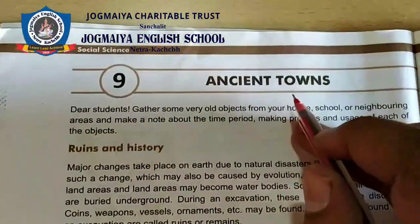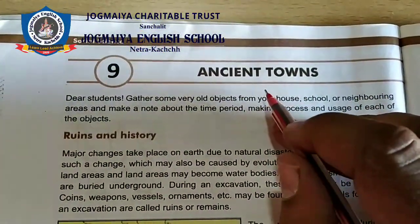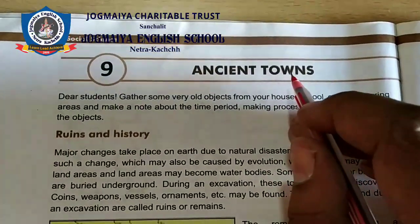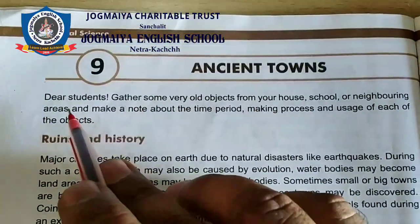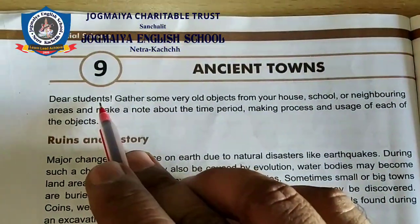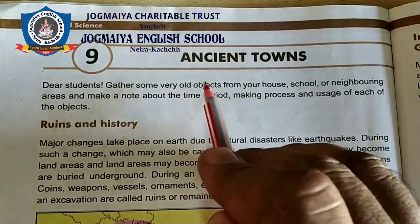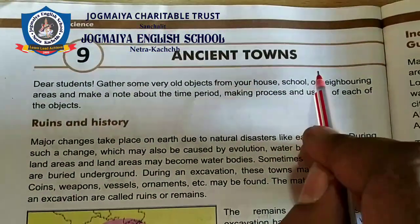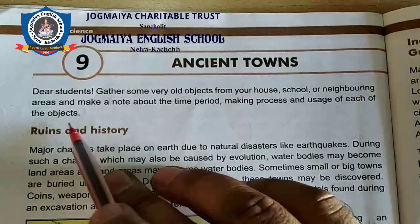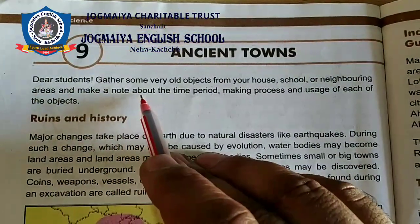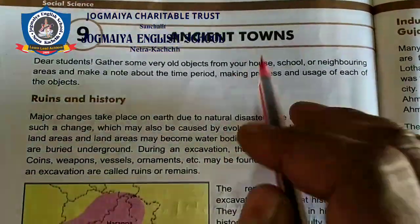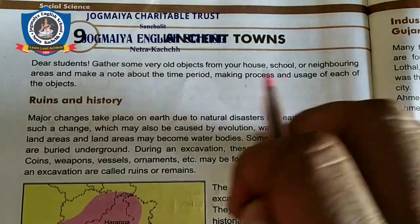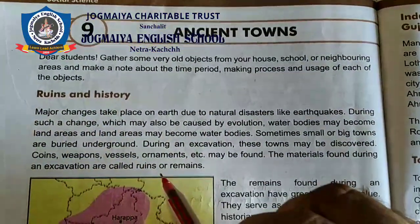Ancient means very old. Towns means any city. Dear students, gather some very old objects from your house, school, or neighboring areas and make a note about the time period, making process, and usage of each of the objects.